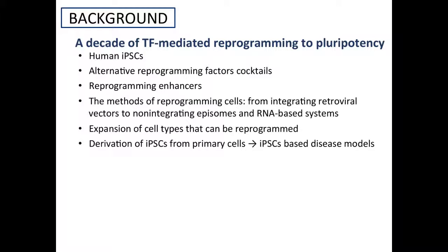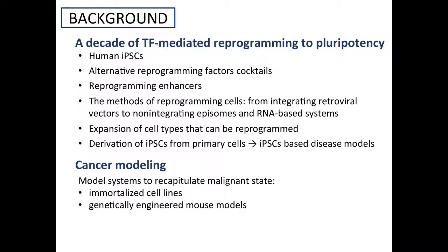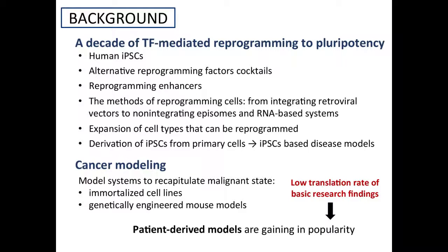The derivation of iPS cells from primary human cells offers very interesting opportunities for creating disease models, and in the past few years multiple iPS-cell-based models of mainly monogenic diseases have been created. However, the potential of iPS-cell modeling in cancer research is just beginning to be explored. Cancer research relies on models to recapitulate the malignant state at the molecular, cellular, tissue, organ, or organism level. Preclinical cancer research uses mainly immortalized cell lines and mouse models, but there is a low translation rate of basic research findings, so patient-derived models are increasing in popularity.